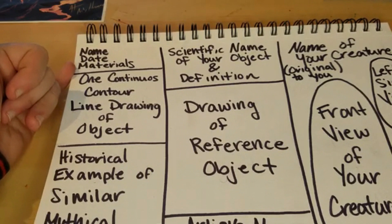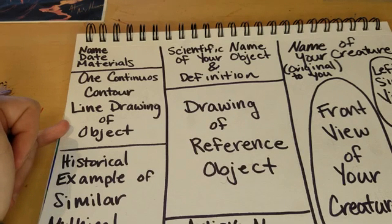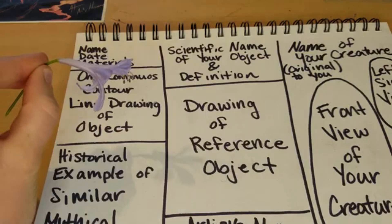The next section is a one-continuous contour line drawing of the object that you chose from the outdoors. It can be anything from a leaf to a vine to an acorn, a flower — whatever you find that interests you and you think you can make a mythical creature out of. Mine was an African lily. You can see this one's from yesterday — it's a little wilted, but I found it just outside, and that was my experimentation study for this week.